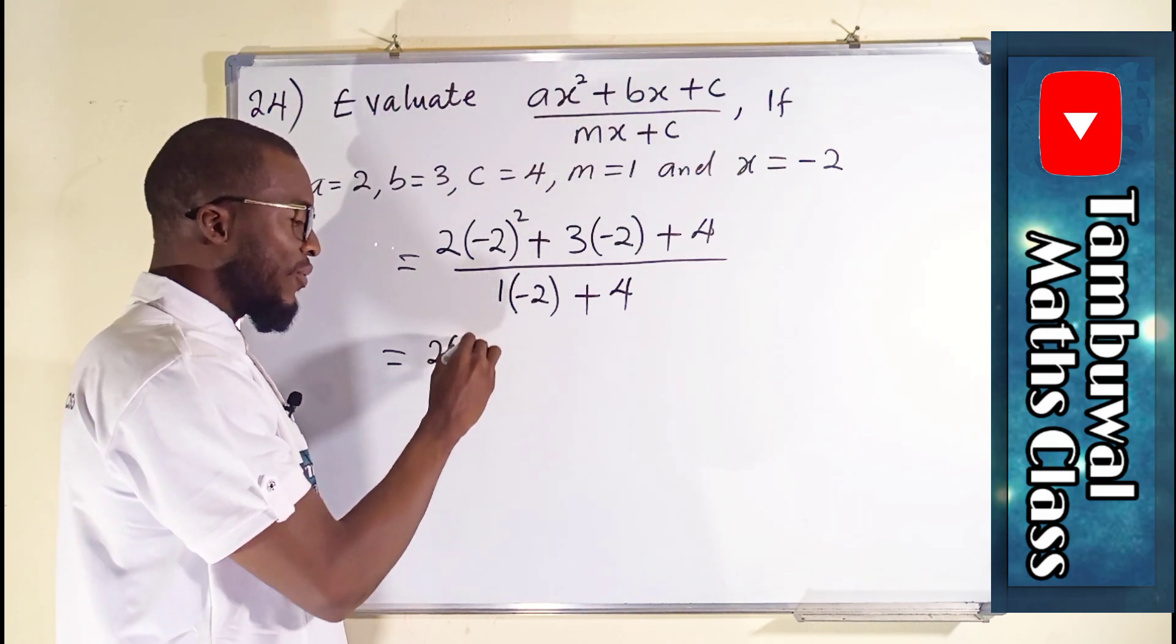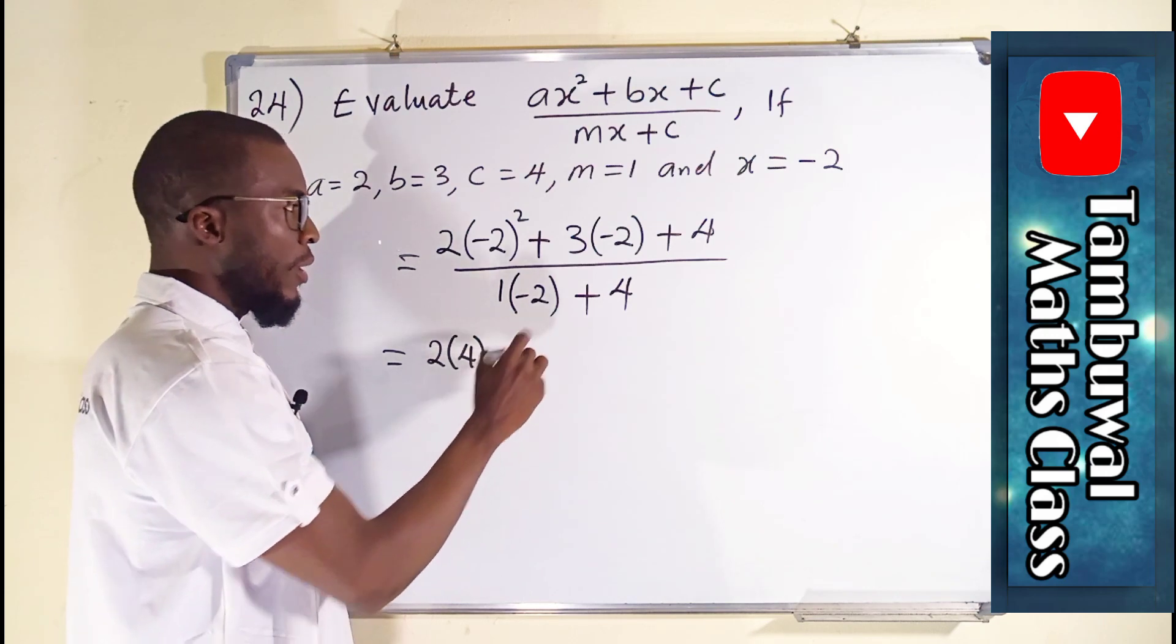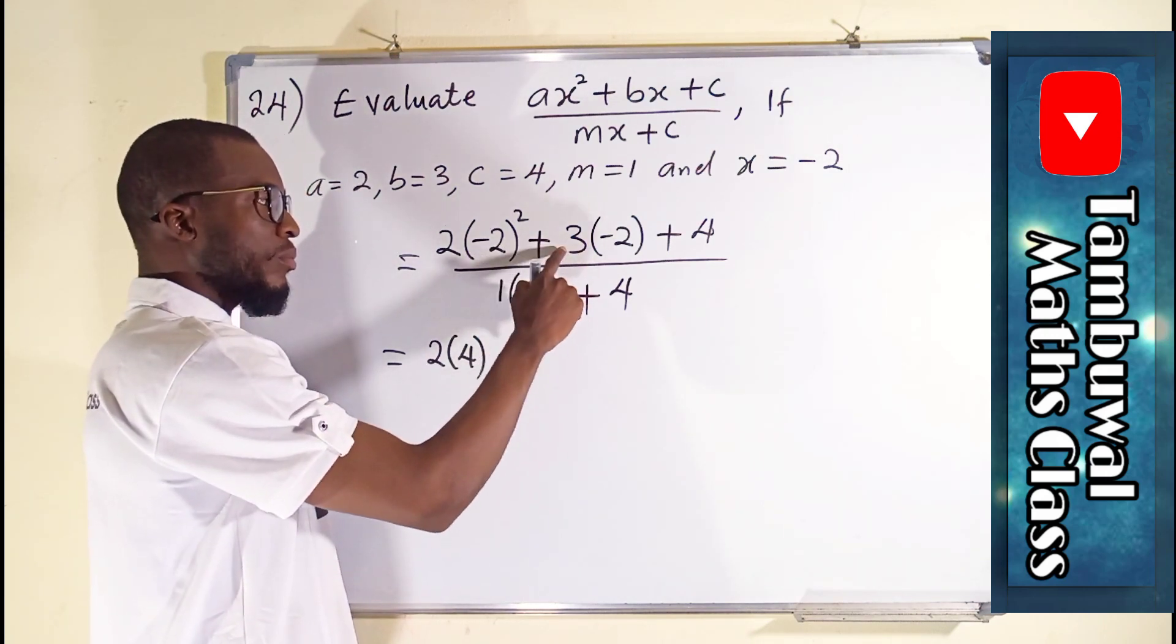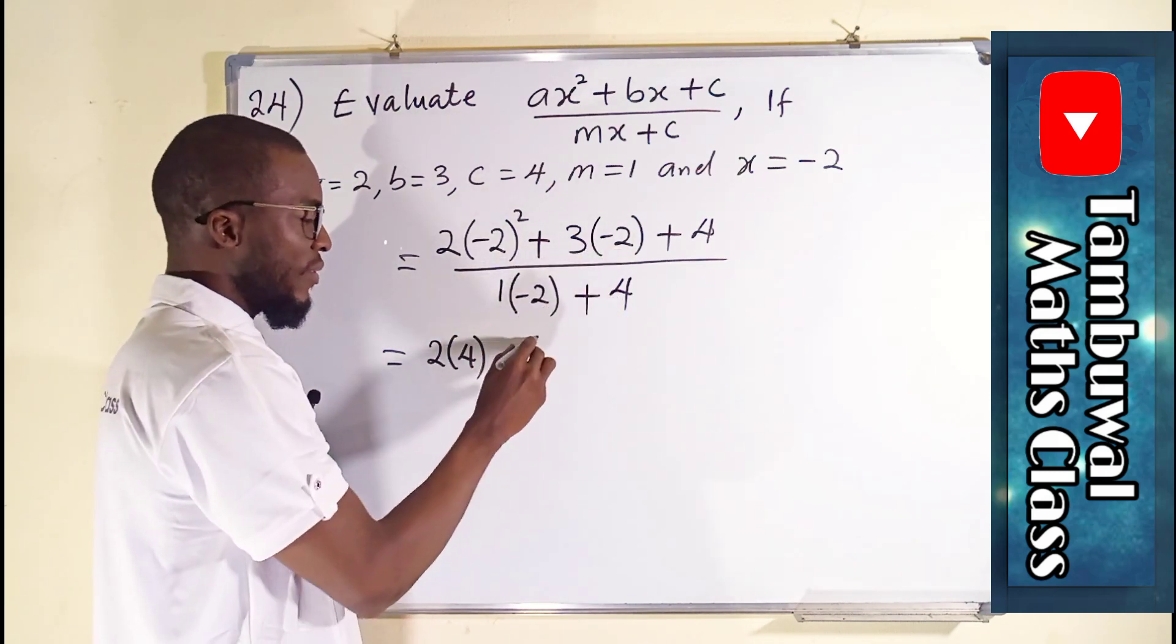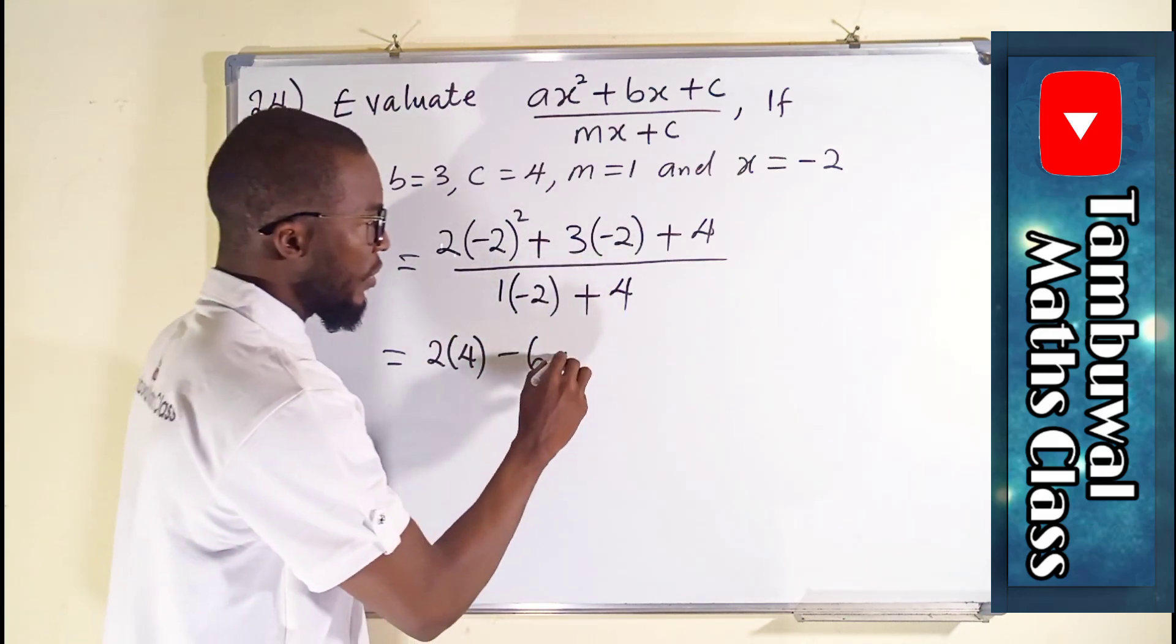So we have 2 times 4 minus—because this minus will override this positive sign—3 times 2 is 6, and we have 4 here.